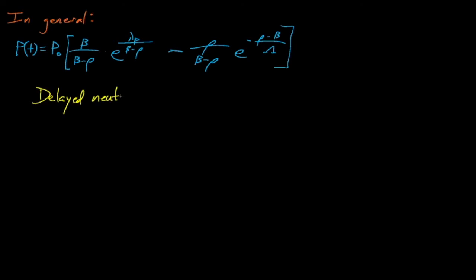In general, this equation describes a reactor's time-dependent response to a reactivity insertion. This equation contains two terms, the first of which describes the multiplication of delayed neutrons and the second of which describes the multiplication of prompt neutrons.